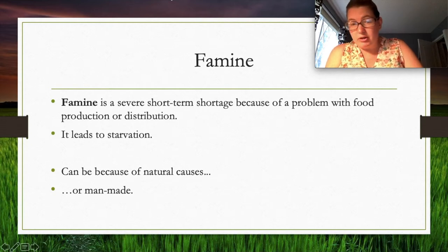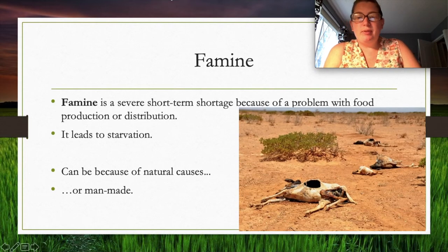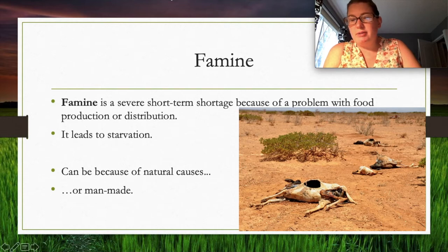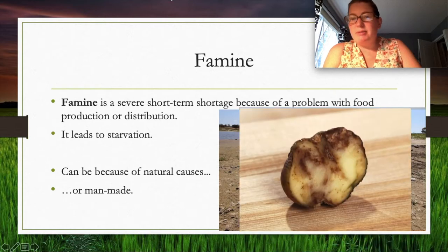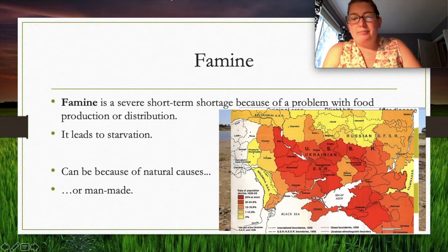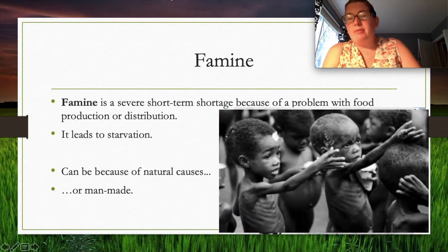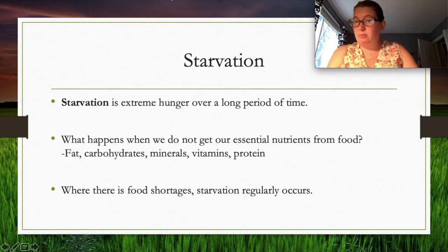Famine can be caused by natural disasters like drought or by man-made causes. Examples include poor cows dying because of drought, fish drying up in lakes, and potato blight — which caused dramatic population decline in some areas and led to widespread famine.